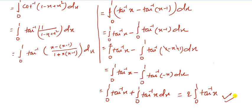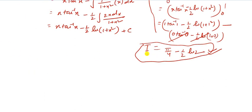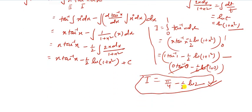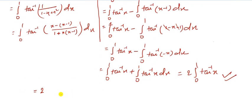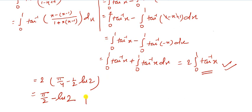The first proof is complete. Now applying the result from the first part, the value of 2 times the integral from 0 to 1 of tan inverse x dx equals 2 times (pi by 4 minus one-half of ln 2), which gives pi by 2 minus ln 2. Proved.